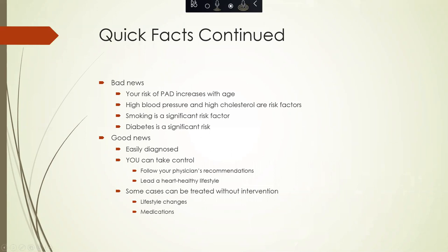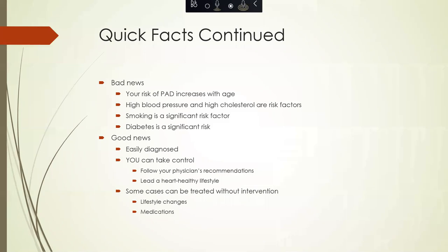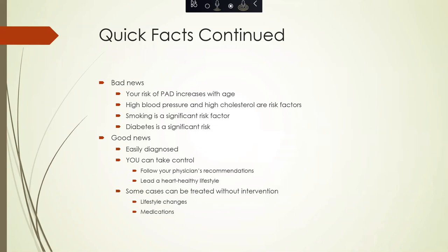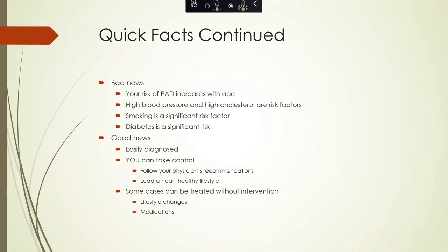Your risk of peripheral arterial disease or PAD increases with age. Unfortunately, there's nothing we can do about aging. But high blood pressure and high cholesterol are also risk factors, which are easily managed. Smoking is one of the most significant risk factors for PAD and is very easily treated by stopping smoking. Diabetes is also a pretty significant risk factor.